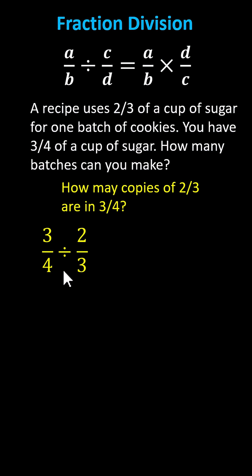Now to divide, we'll write the quotient as an equivalent product. Recall dividing by two-thirds is equivalent to multiplying by the reciprocal of two-thirds, which is three-halves.